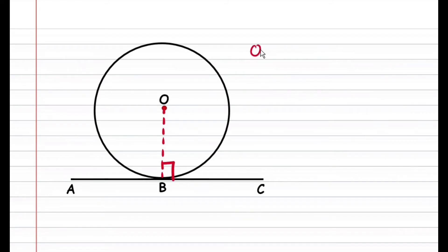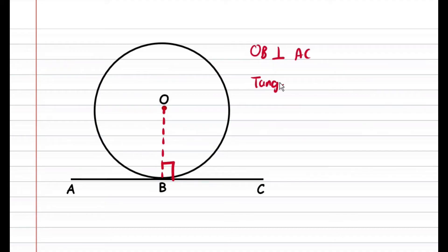So we're saying that OB is perpendicular to the tangent AC, and our reason for that is: tangent perpendicular to radius. We're going to go ahead and use that.